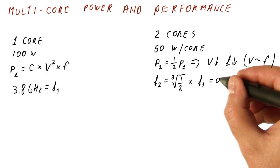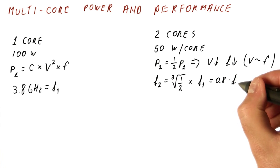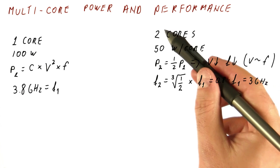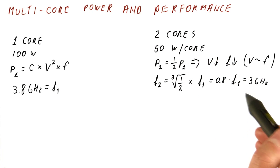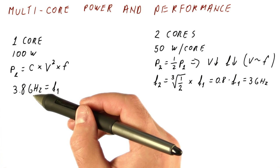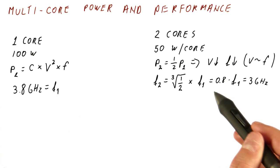And that ends up being 0.8 approximately times F1 or 3 gigahertz. So as you can see, if we now use only one of these cores, we get to run it at 3 gigahertz as opposed to 3.8 gigahertz that we could get here. So this is noticeably slower.